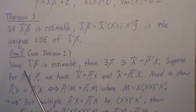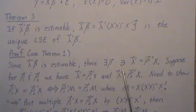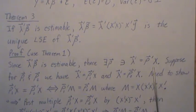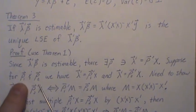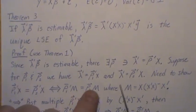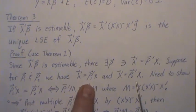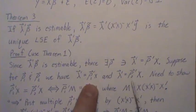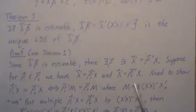Proof using Theorem 1: since this function is estimable, there exists a rho such that lambda prime equals rho prime X — meaning lambda is in the row space of the design matrix. Suppose there exist two such vectors, rho 1 and rho 2, both satisfying lambda prime equals rho prime X. Because they both equal lambda, they both equal each other. What we want to do is prove a sub-lemma within this bigger proof first.